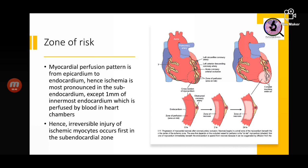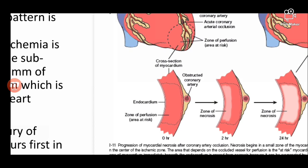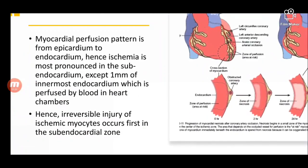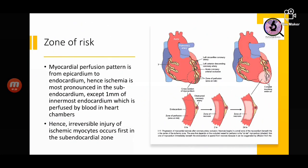To understand which area of the myocardium is at risk after coronary obstruction, we need to know that vessels supply from outside to inside — from epicardium to endocardium. Therefore the innermost layer, the endocardium, is at maximum risk for ischemia. The exception is the innermost 1 mm of the endocardium, which is not perfused by the coronaries but supplied by blood in the heart chambers. Injury to the heart muscle occurs first in the subendocardial zone.